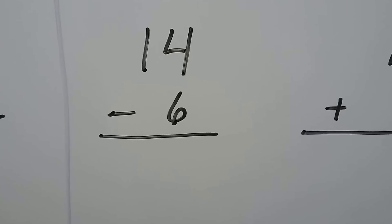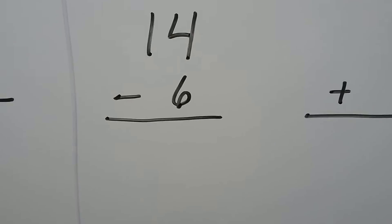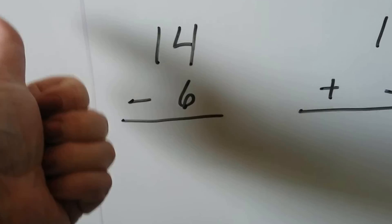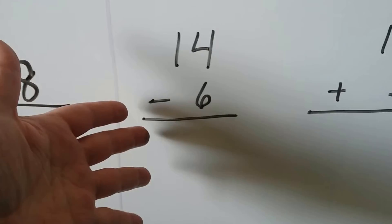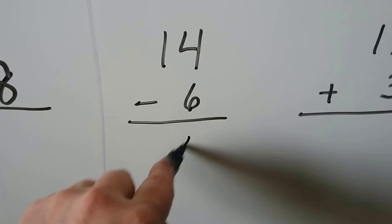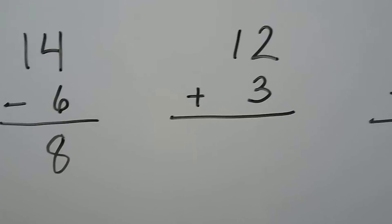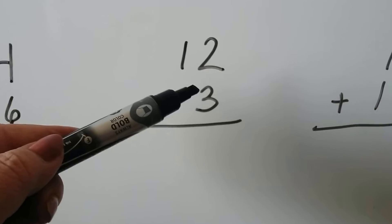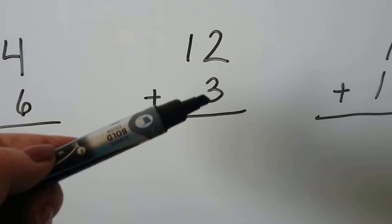14 minus 6 — we can start at 14 and count back 6: 14, 13, 12, 11, 10, 9, 8. For 12 plus 3, we can start at the larger addend, 12, and count on 3: 12, 13, 14, 15.